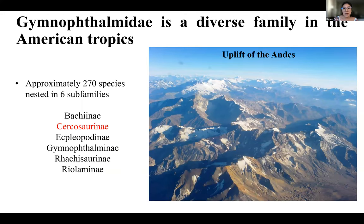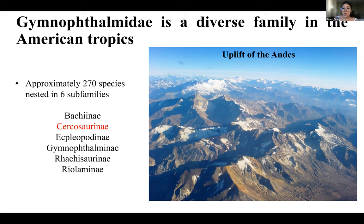Gymnophthalmidae is a diverse family in the American tropics, with around 300 species nested in six subfamilies, and the family is endemic to Central and South America. Some studies have found that the time when several species of this group started to diversify matches the origin of the uplift of the Andes, and other studies suggest that high altitudes correlate with high levels of species endemism. Therefore, we can conclude that the uplift of the Andes played an important role in the diversification of Gymnophthalmidae lizards.